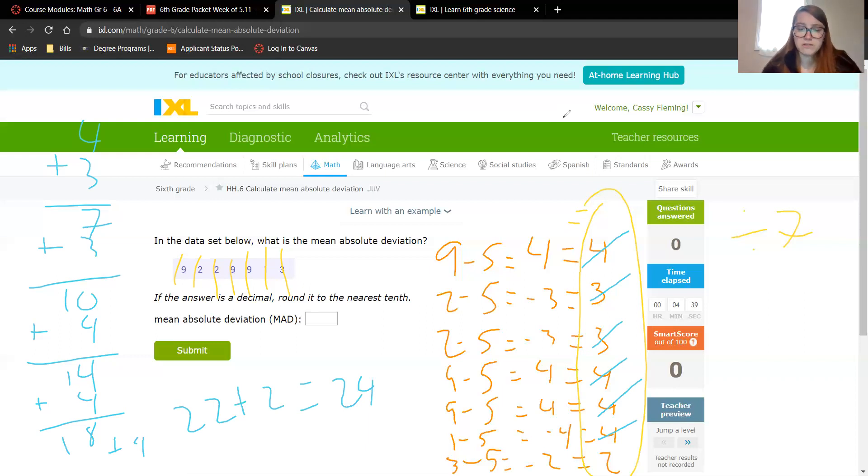So we need to divide 24 by 7. I'll do that over here. So we have 24 divided by 7. And this tells us here, round to the nearest tenth.